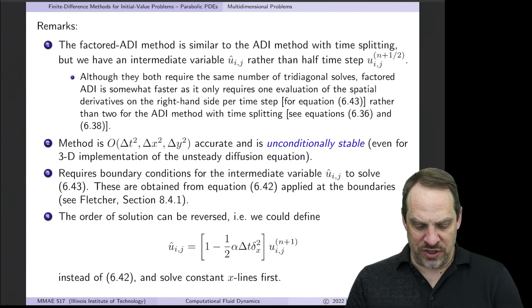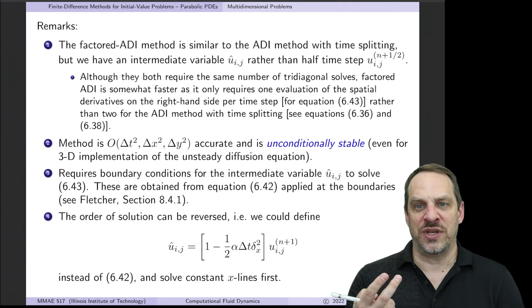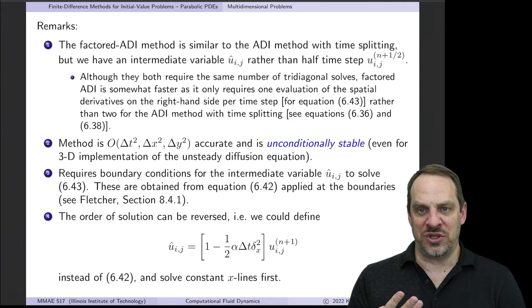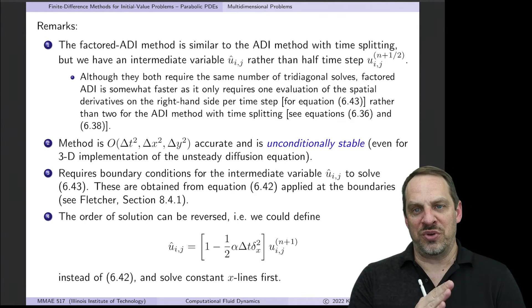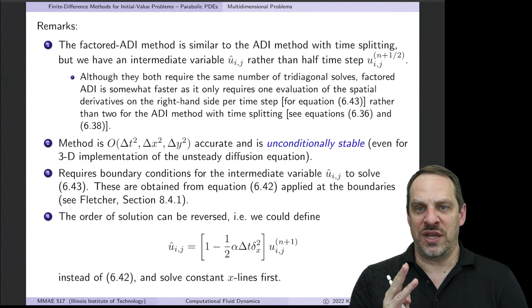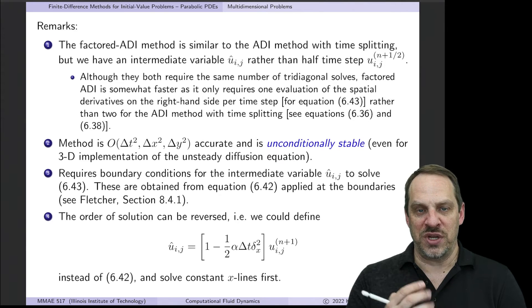It is second order accurate in space and time. It's unconditionally stable for the two dimensional case that I'm showing here. It's also unconditionally stable for the three dimensional case as well. You'll remember that in the fractional step method, the 2D case was unconditionally stable, but the 3D case was not. So this improves a bit on the stability for that 3D case.